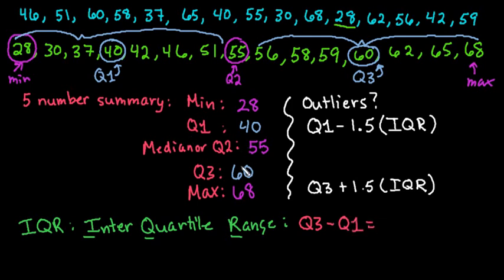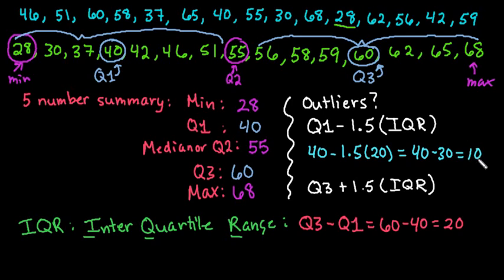So in this case, we would take Q3, which is 60, minus 40, which is equal to 20. So that's what we would plug in here to see if it works out. So our Q1, remember, is 40. So we would do 40 minus 1.5 times 20. And 1.5 times 20 happens to be 30. So this is really 40 minus 30, which is 10. So in order to be an outlier, the professor would have to be under the age of 10, which we don't have. So we have no lower outliers.